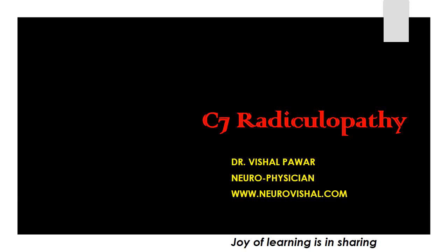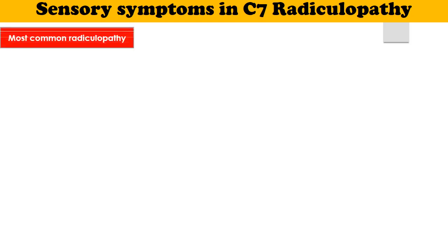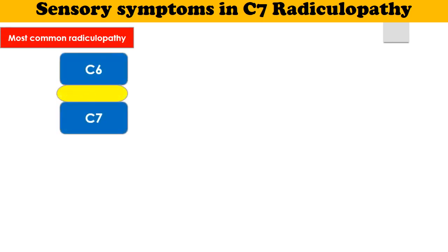In this video, I am going to discuss signs and symptoms of C7 radiculopathy. C7 is the most common radiculopathy, which is seen in the most common disc lesion, i.e., C6-C7 disc lesion.